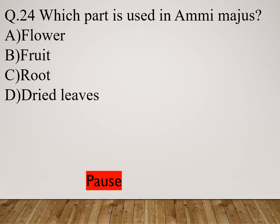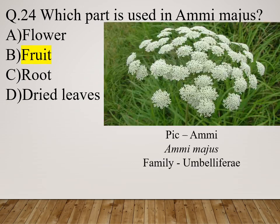Question 24: Which part is used in Ammi majus? Option A: Seed. Option B: Fruit. Option C: Root. Option D: Dried leaves. The right answer is fruit. Scientific name Ammi majus, belonging to family Apiaceae (Umbelliferae).